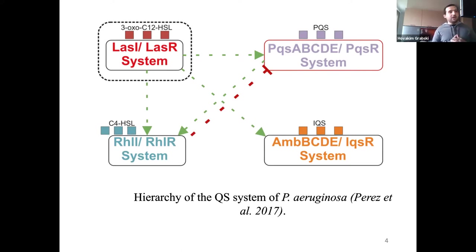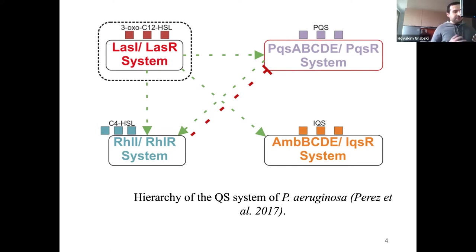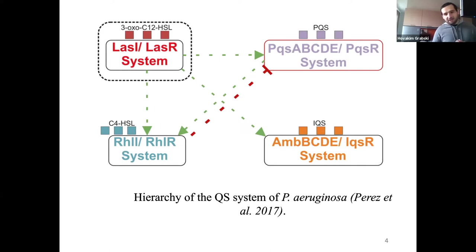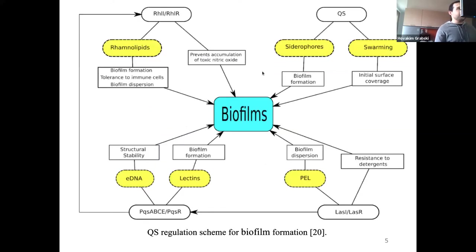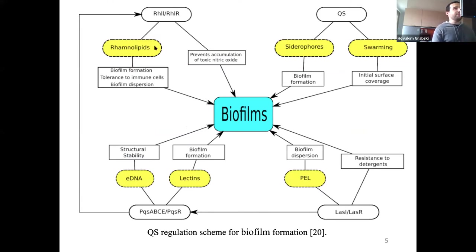Inhibiting LasR can lead to a decrease in the synthesis of biofilms and also make antibiotics more effective, because it decreases the resistance mechanisms of the bacteria by turning off the quorum sensing system. All of the systems lead to the synthesis of biofilms, so targeting the LasR system is particularly important.